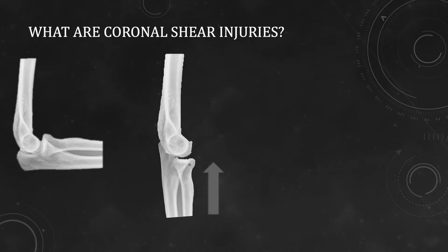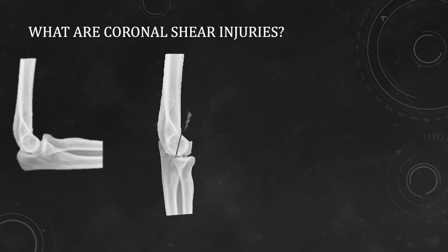For example, when the elbow is extended and the direction of force is axial, there will automatically be stress on the radial head, and the radial head will impact the capitulum. On the other hand, the coronoid will impact over the trochlea, resulting in a force directed tangential to the articular surface, which results in a coronal shear fracture. The impact on the capitulum and trochlea will result in a coronal shear fracture.